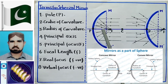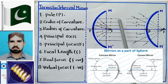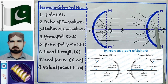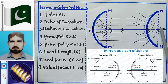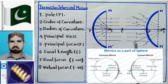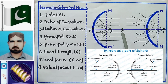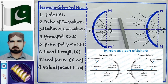आगे है principal focus। आप दोनों mirrors के अंदर देख रहे हैं — concave mirror में parallel rays जो principal axis के parallel आ रही हैं, वो reflection के बाद एक point पे इकट्ठी हो जाती हैं। Convex mirror में वो parallel rays diverge हो जाती हैं, लेकिन एक point से निकलती हुई महसूस होती हैं। वो point principal focus कहलाता है। Concave mirror का दूसरा नाम converging mirror भी है क्योंकि ये light की parallel rays को एक point पे converge करता है। Convex mirror का दूसरा नाम diverging mirror भी है क्योंकि ये light की parallel rays को मुख्तलिफ directions में diverge कर देता है।